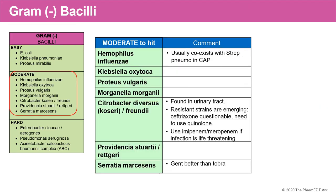The second subgroup of gram-negative bacilli are the moderate-to-hit gram-negatives. These include a number of species listed in the table. The moderate-to-hit gram-negatives require a slightly higher tier of antibiotic to kill them. Of note, Haemophilus influenzae is a bacteria that usually coexists with Strep pneumo in community-acquired pneumonia. Citrobacter diversus coseri or ferrandi is found in the urinary tract; however, resistant strains are emerging where treatment with ceftriaxone may be questionable and it may need to be treated with quinolones.